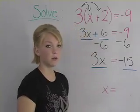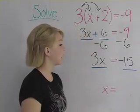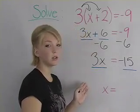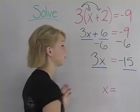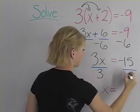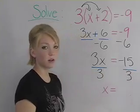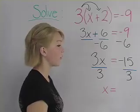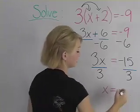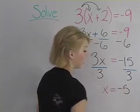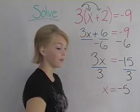Now since we're solving for x, we're going to get x on this side, so we're going to divide by 3, which gives us our final answer of x equals negative 5.